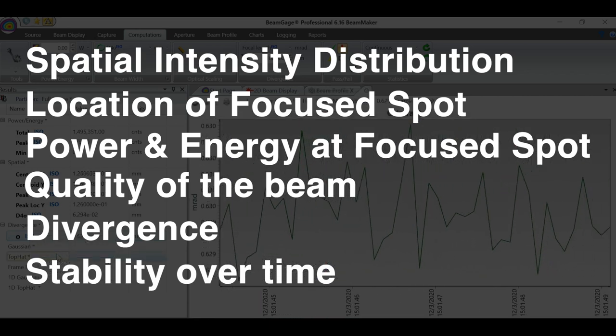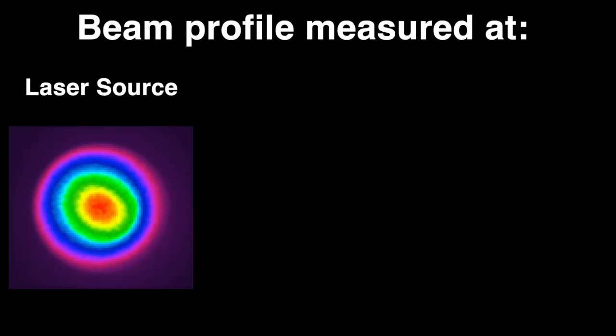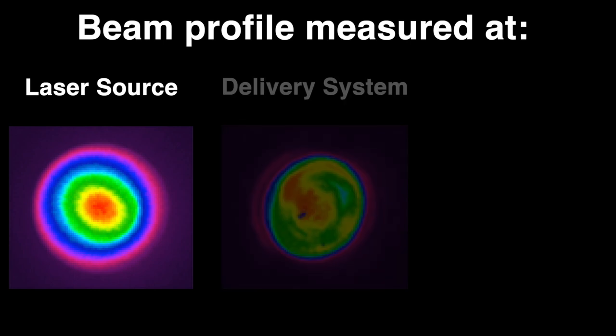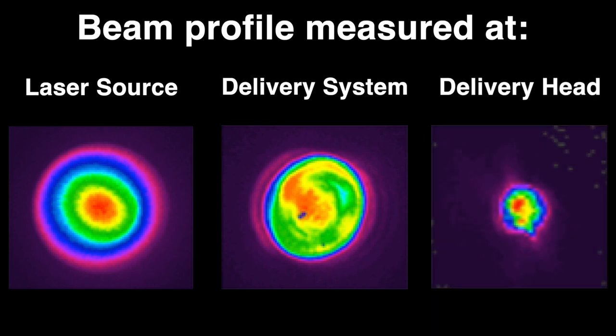MKS Ophir instruments answer these questions. In the example shown, a laser source is measured with beam gauge and a camera before transiting through the laser delivery system. A second beam profile is measured in the middle of the laser delivery system, and finally at the laser delivery head. Notice how the beam profile changes at different locations through the delivery path.